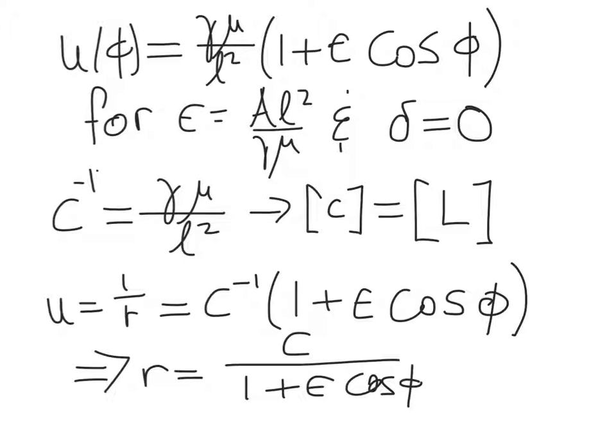So coming back to our solution u of phi, we find that we can rewrite u of phi as this constant up front times 1 plus epsilon times cos phi, if we define a new constant epsilon to be that, and if we assume that we're going to measure phi with delta equals 0.